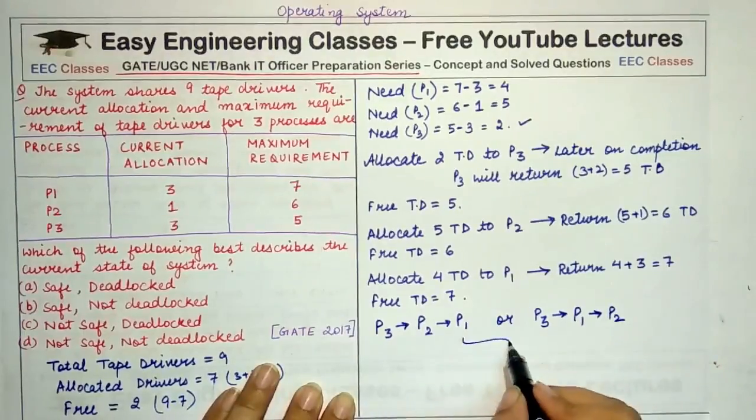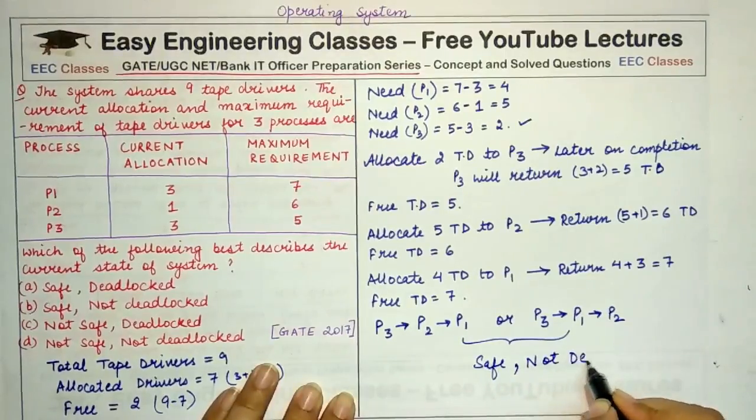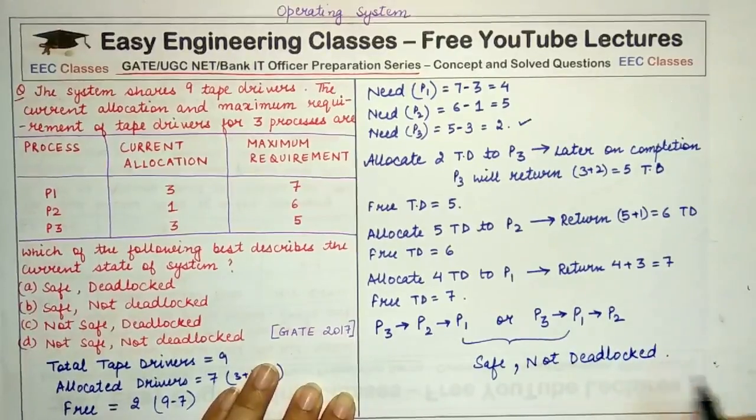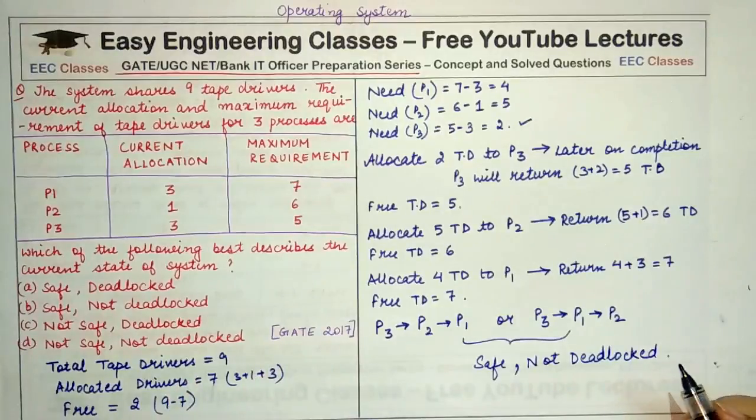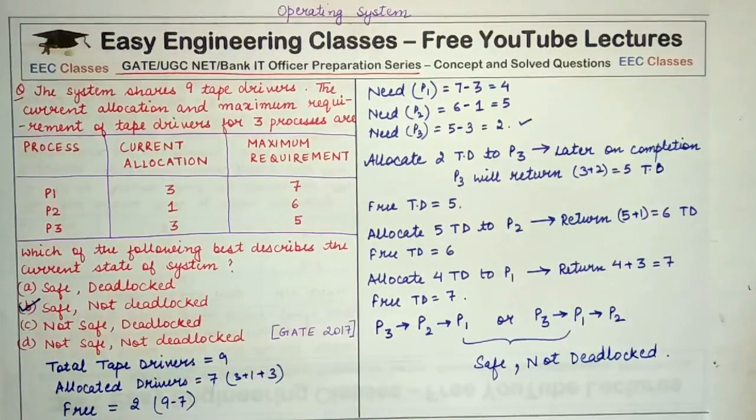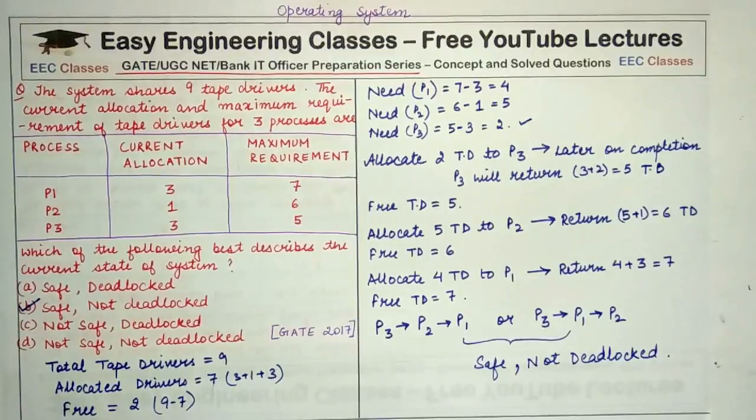So this state is a safe state and this state is not deadlocked because the resources or the tape drivers are allocated in such a way or they are required in such a way by the different processes that we can meet the requirements of all the processes in one sequence or the other. So that's all for today's lecture.